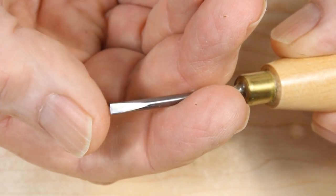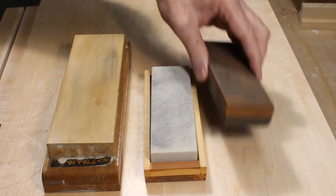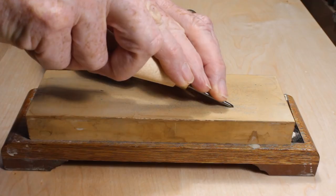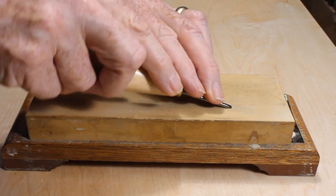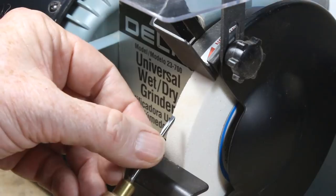Small chisels have special problems when it comes to sharpening. Small blades quickly create grooves in water stones, requiring frequent flattening. Not a very good idea.